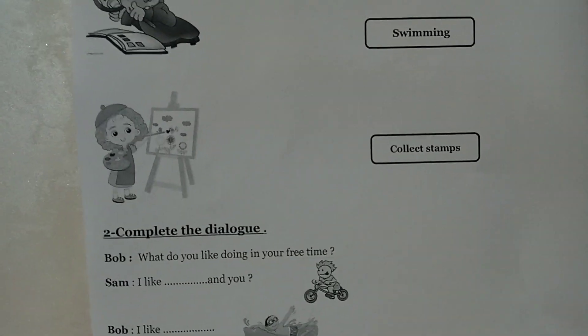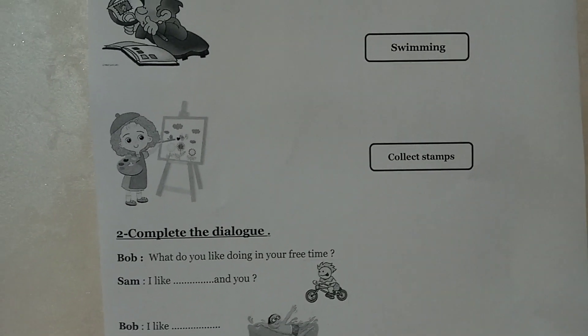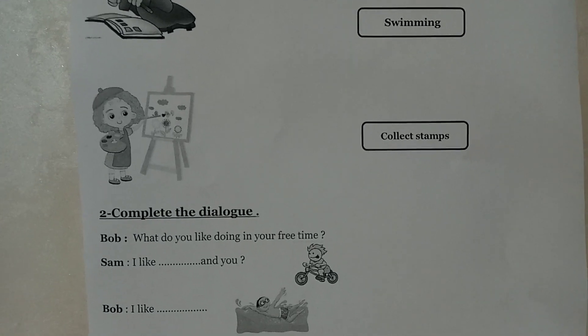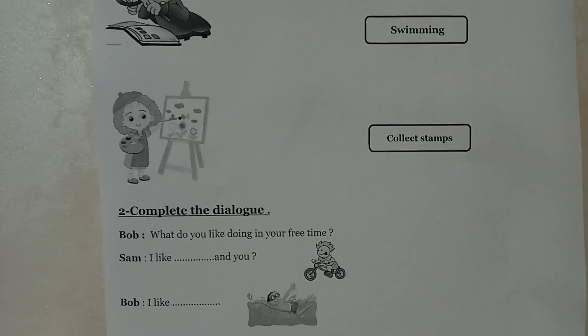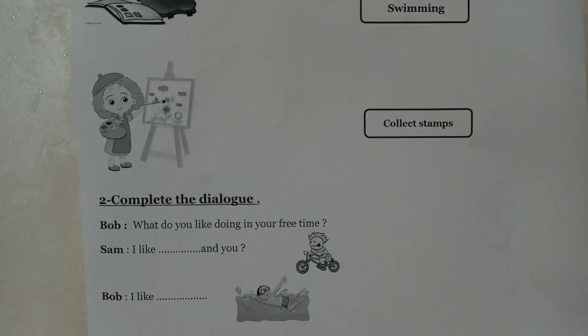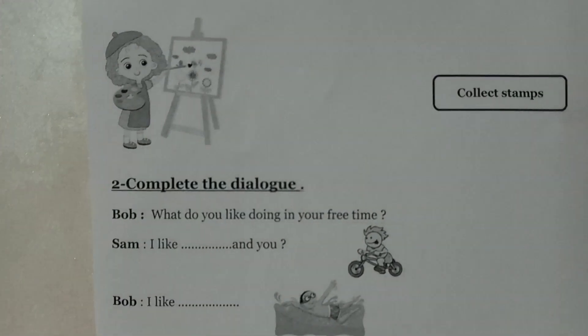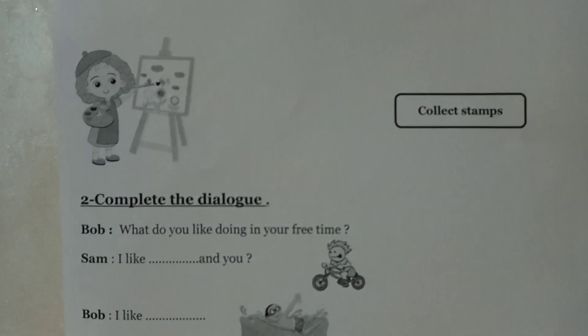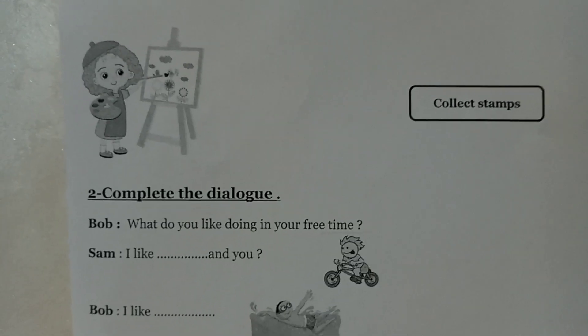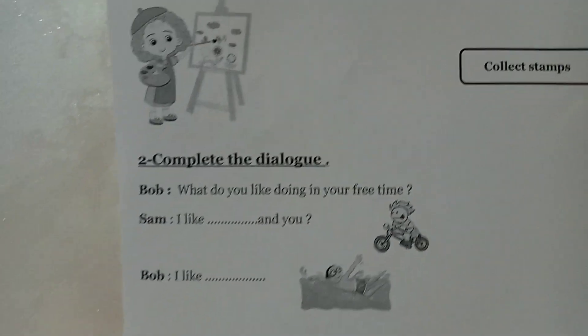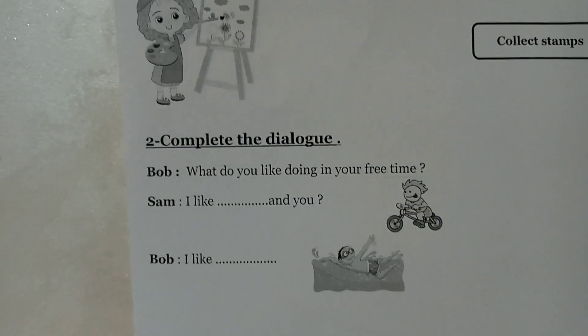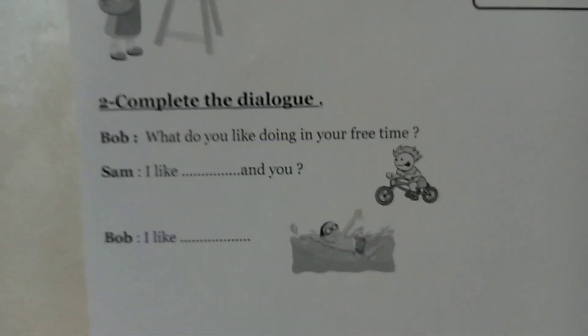Number two: complete the dialogue. Bob asks: 'What do you like doing in your free time?' Sam answers: 'I like...' and then it's your turn. Look at the picture to find what he is doing, and write the answer: 'Bob, I like...'